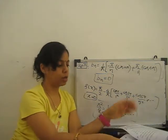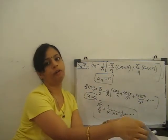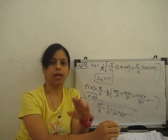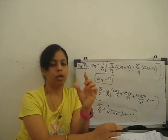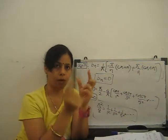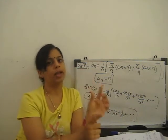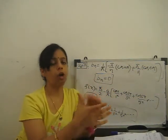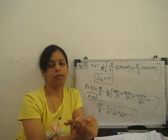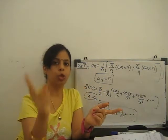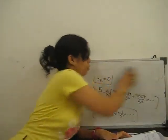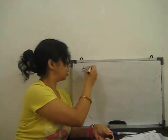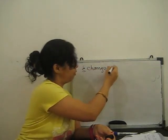Now next we go for the general formula for the Fourier series, which we can call the change of interval. Before this, all Fourier series we discussed were only for the 0 to 2π interval, or equivalently the −π to +π interval of length 2π. Now we talk about the general term — change of interval.